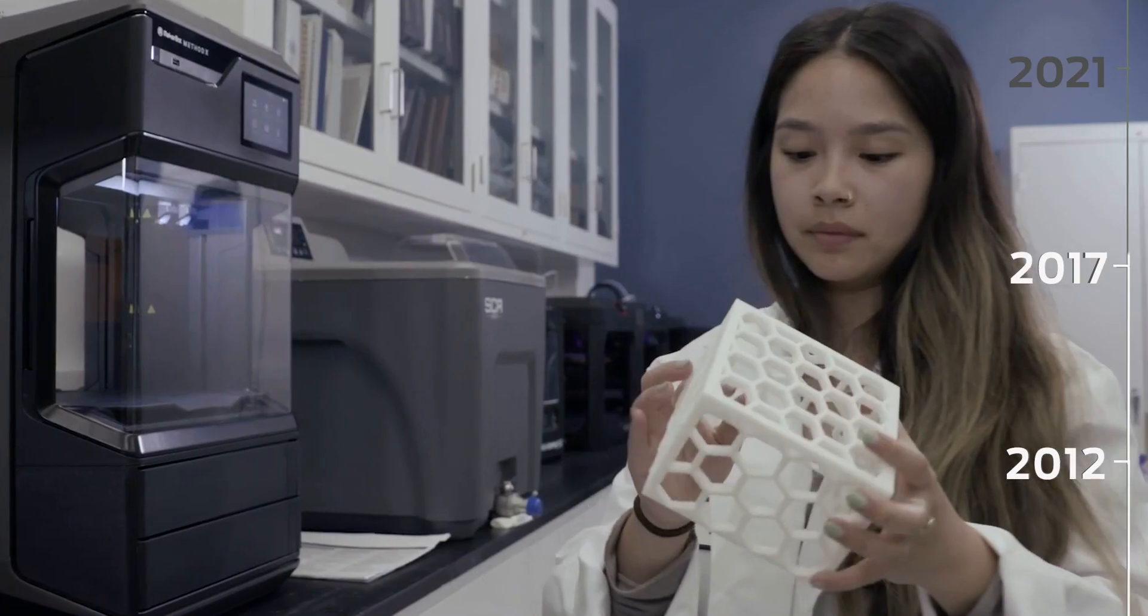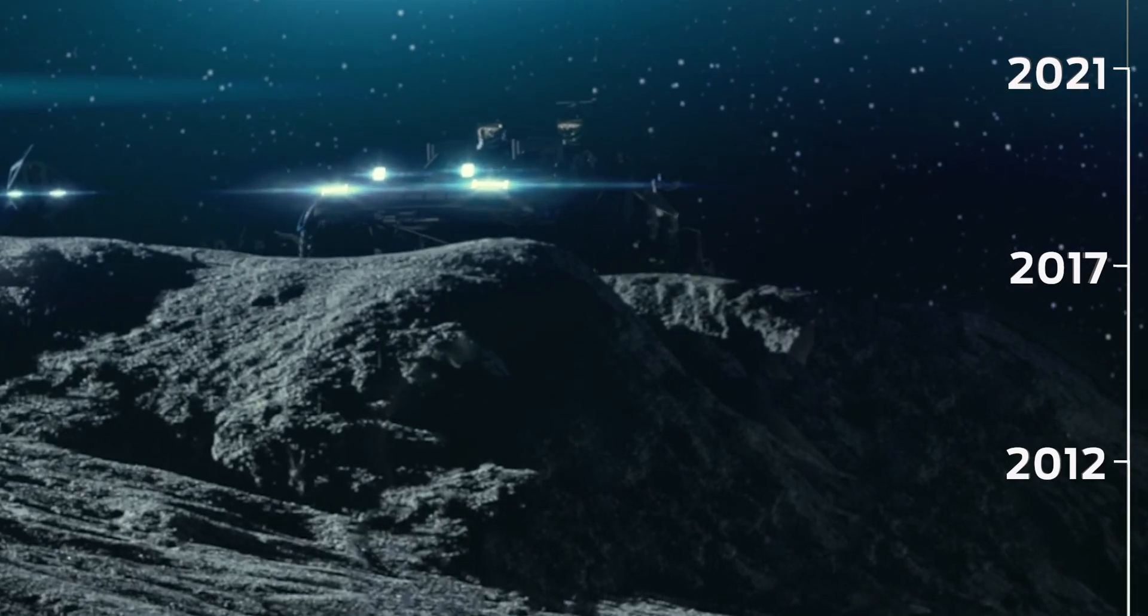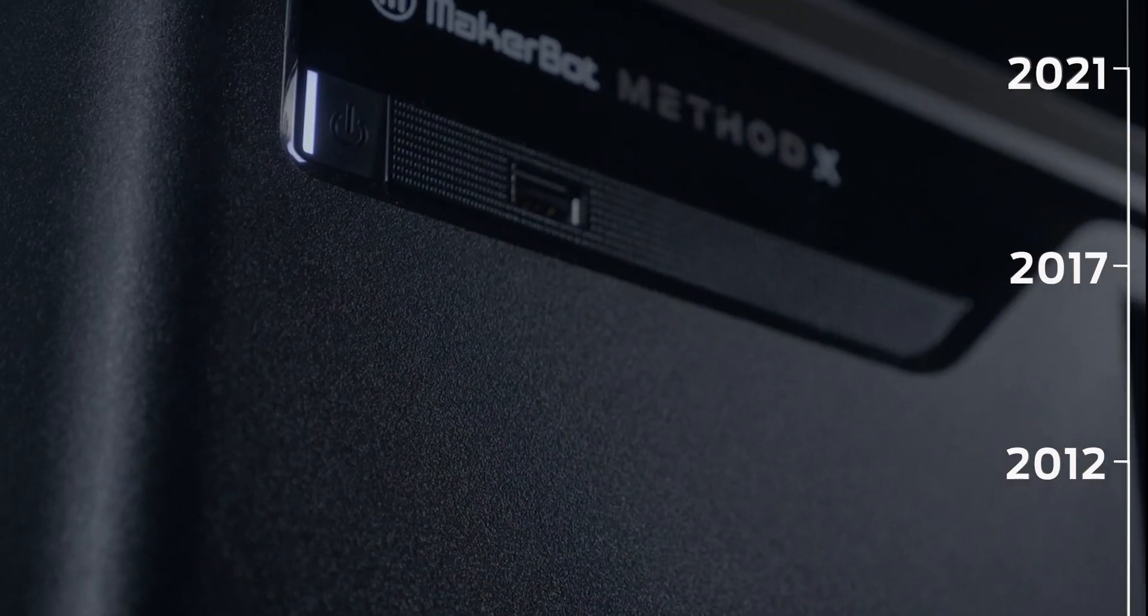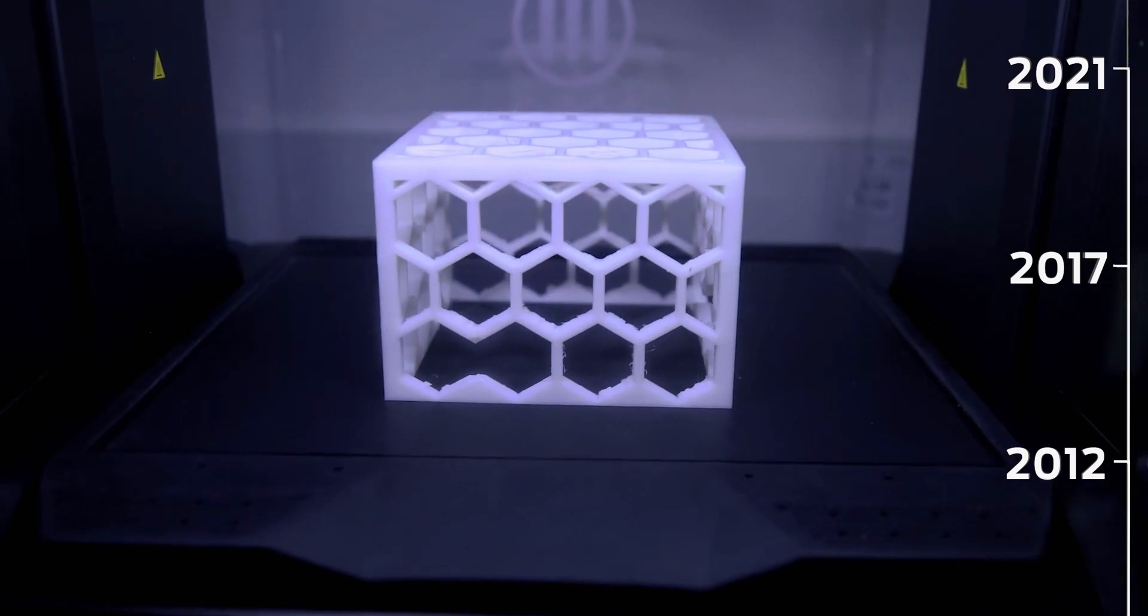We've used the MakerBot Method X to print a number of parts for our rover project. Method X is really nice because it has very dimensionally-tolerance parts right off the get-go.